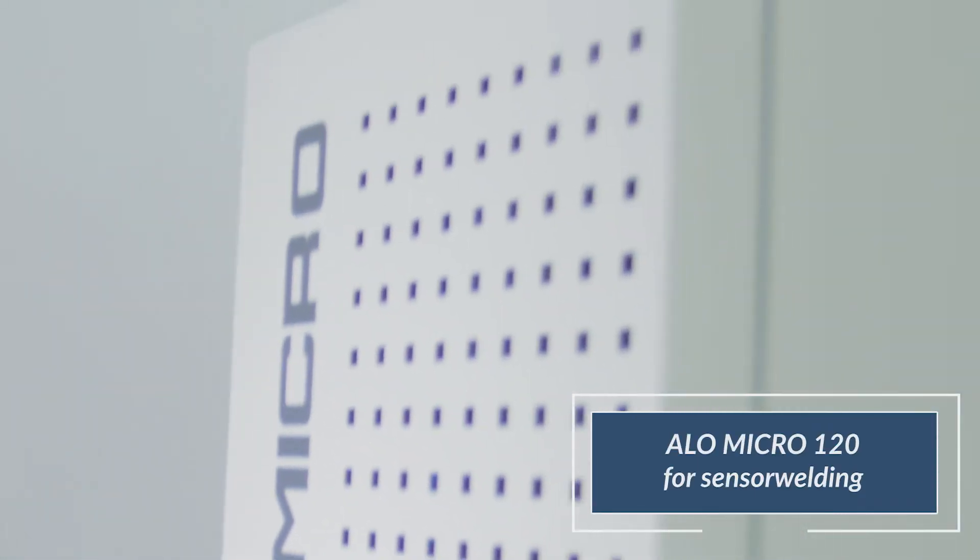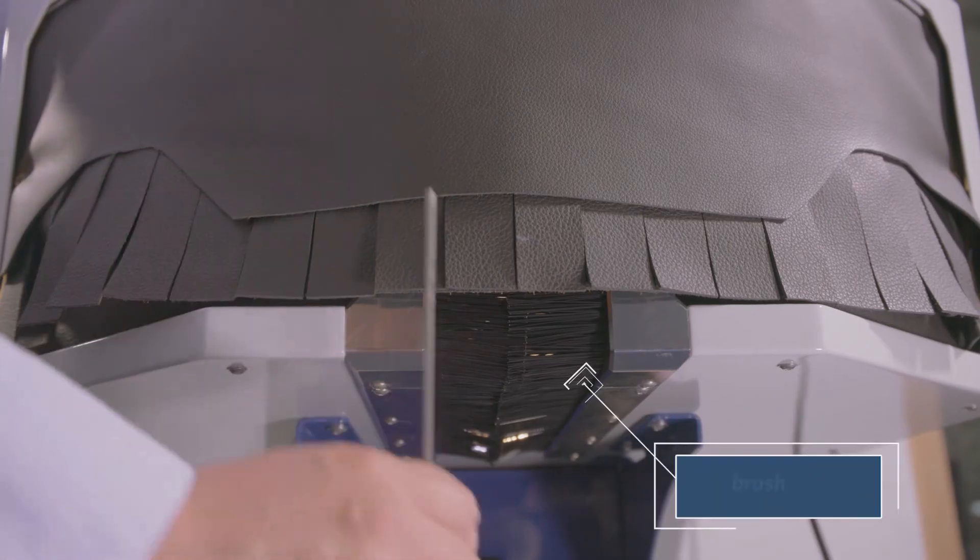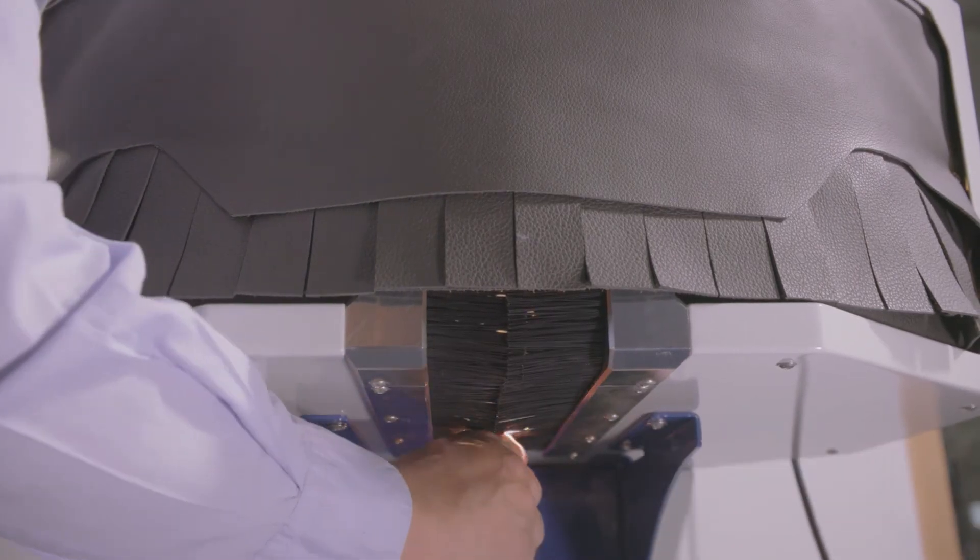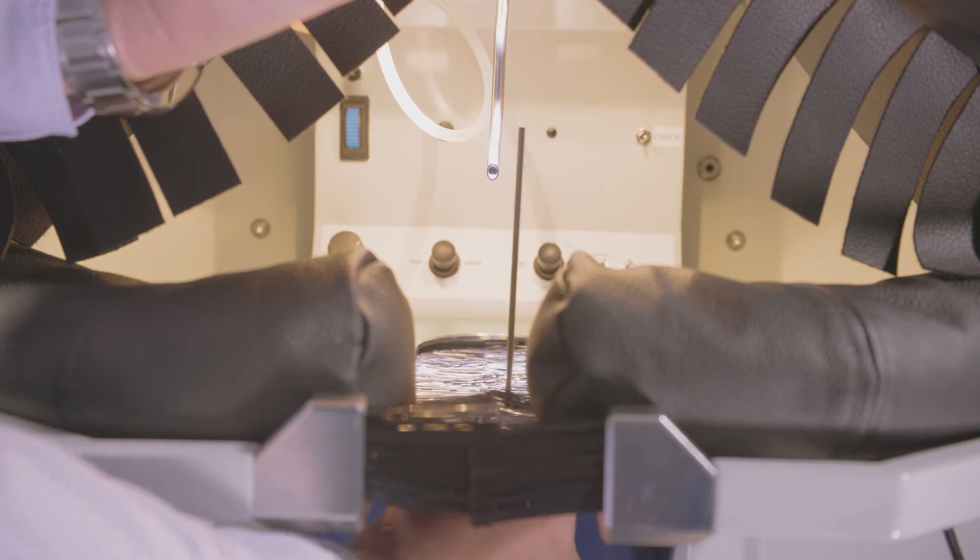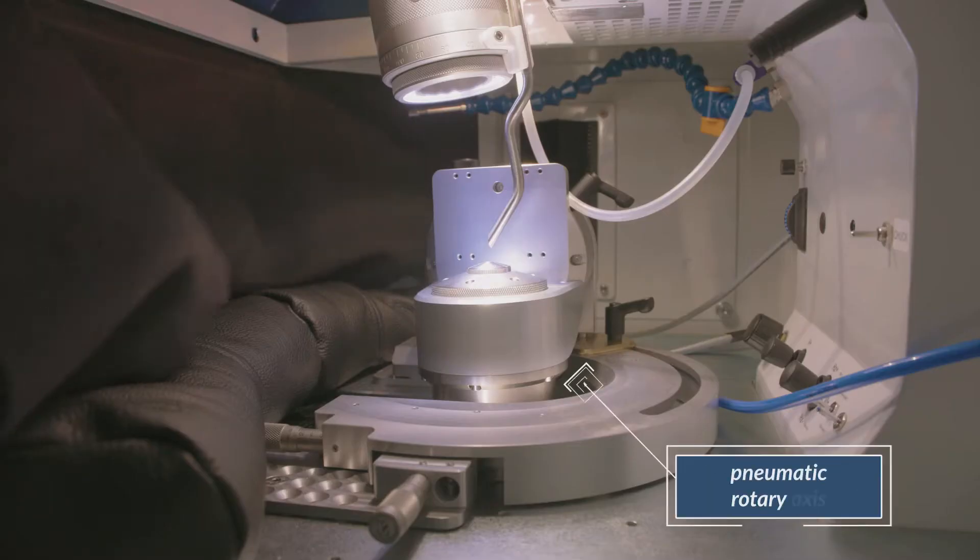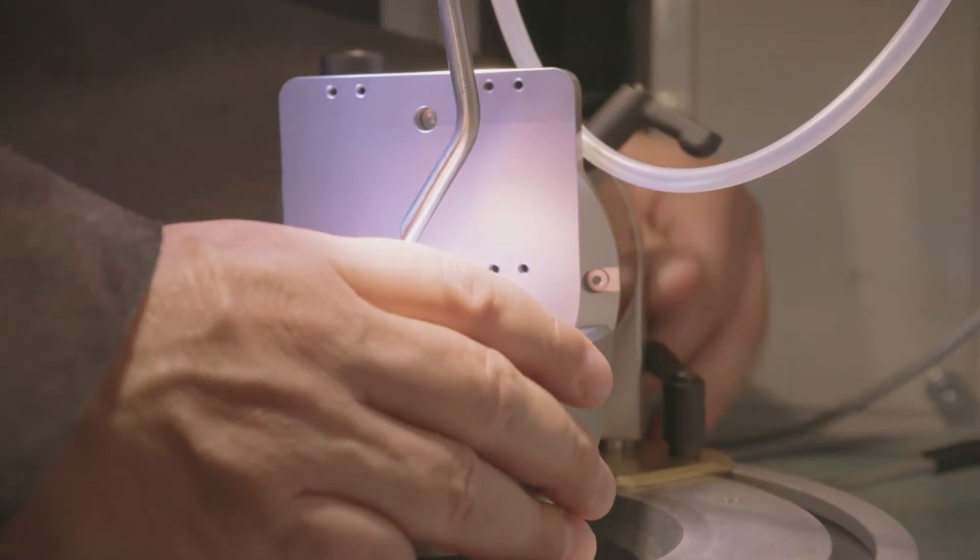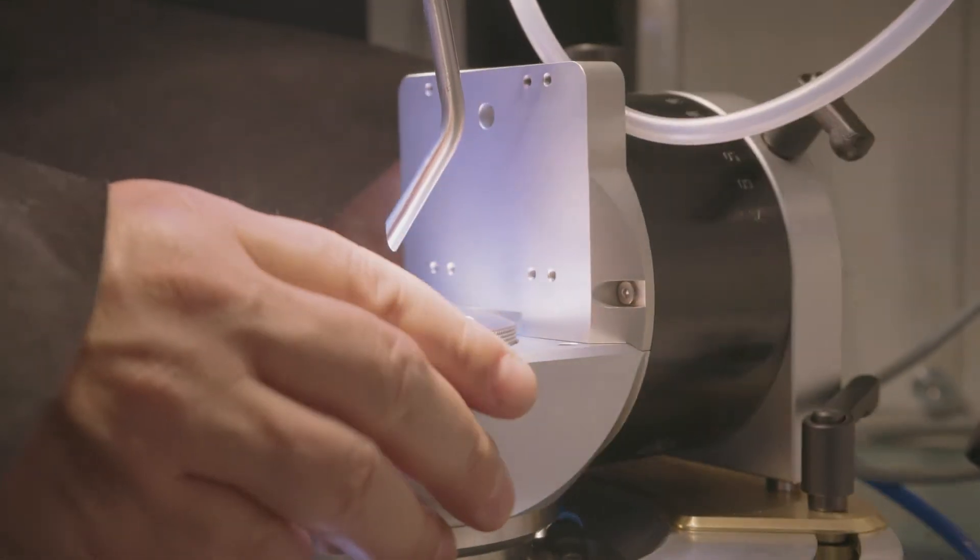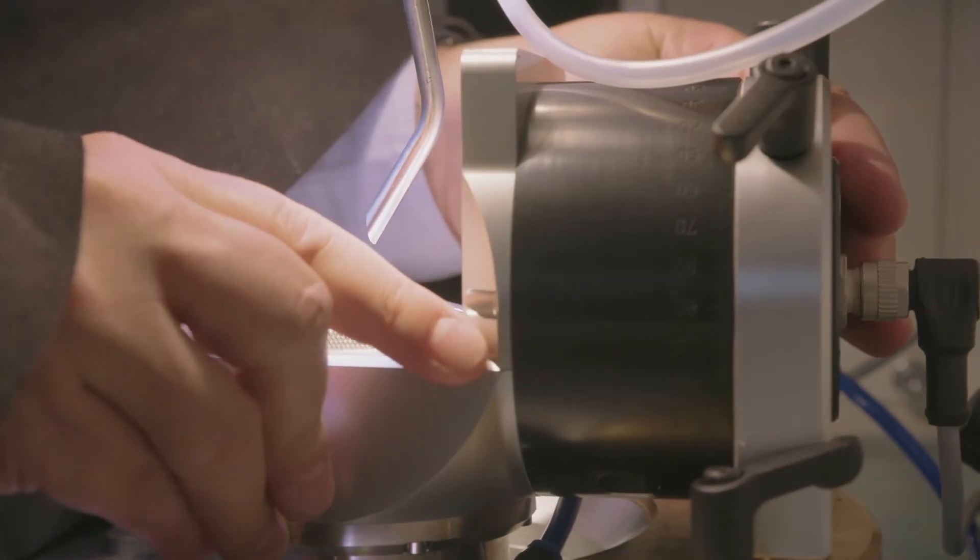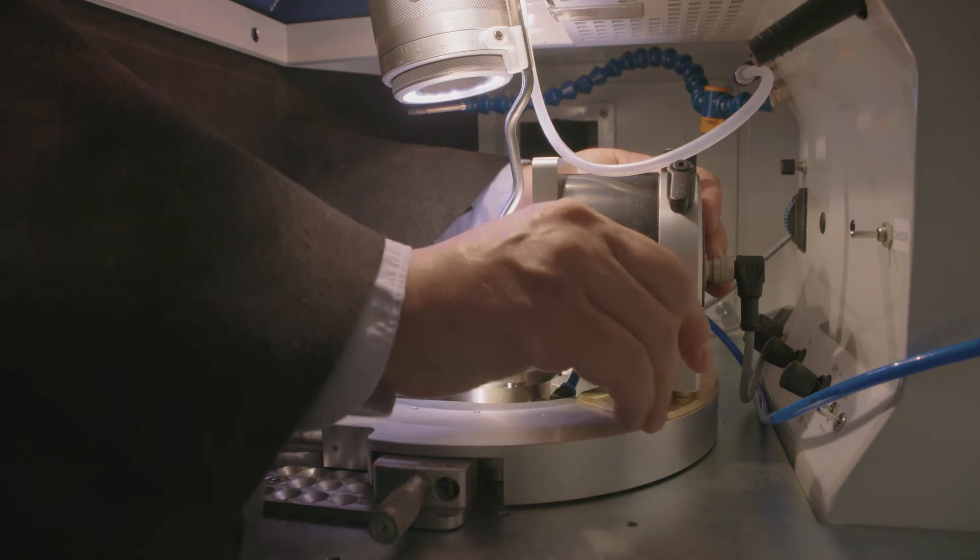Now let's have a look at the ALO Micro. For easy handling of long components, the ALO Micro has a brush slot in the bottom of the working chamber which is open all the way to the front. The optional rotary axis can be freely positioned and swiveled by 180 degrees to reach the ideal workpiece position.